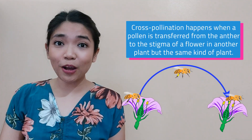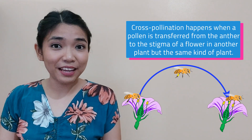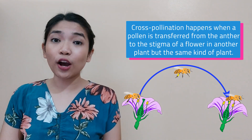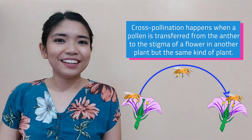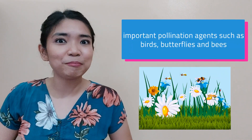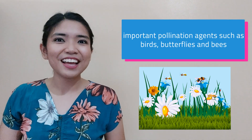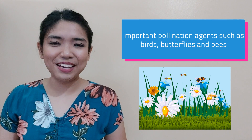Cross-pollination happens when pollen is transferred from the anther to the stigma of a flower in another plant, but the same kind of plant. Cross-pollination from one plant to another happens because of these important pollination agents such as birds, butterflies, and bees.